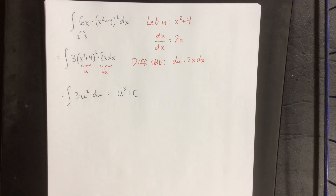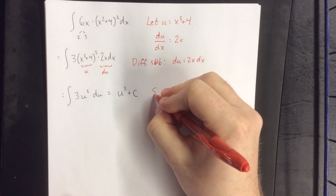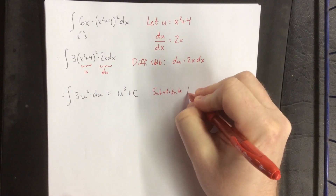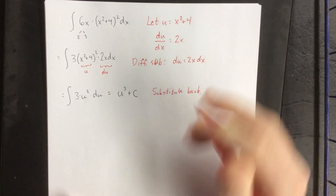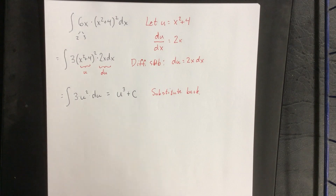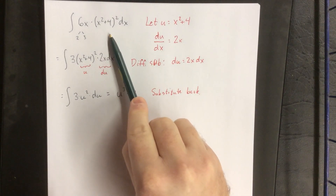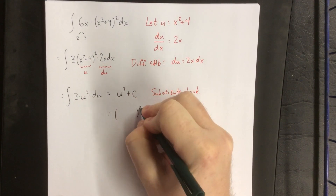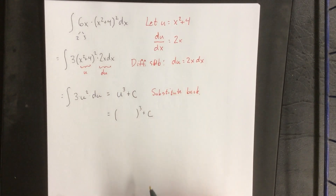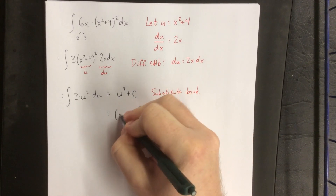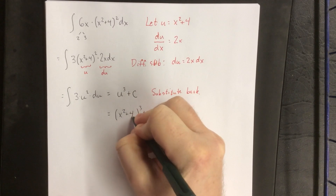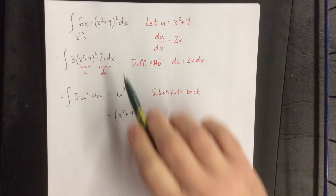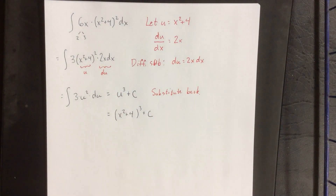Once you have evaluated the integral in terms of u, we can substitute back. If the original problem is in terms of x, the final answer should be in terms of x as well. Since u was equal to x squared plus 4 to begin with, this is how we would anti-differentiate that original function.